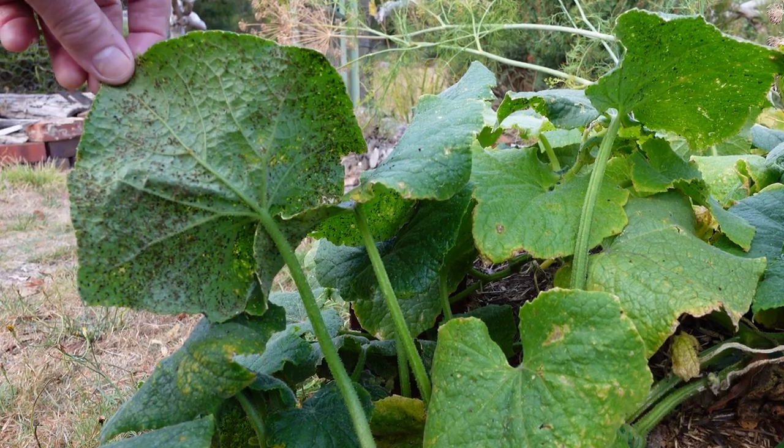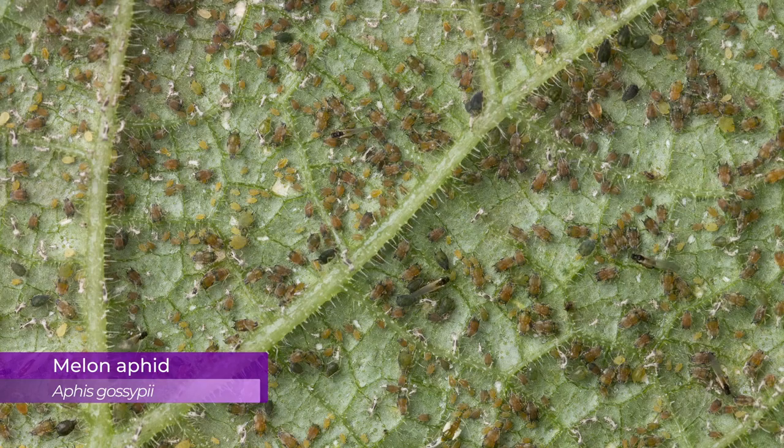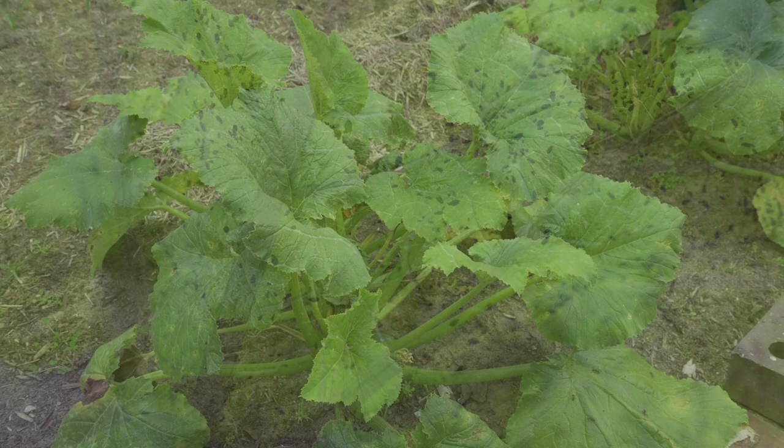A couple of months ago I showed you these aphids on my cucumber plants. They are melon aphids, also known as cotton aphids. Melon aphid is a worldwide pest of a large range of plants. The cucumber plants have finished but the aphids haven't — they are now feeding and breeding on my zucchini plants.